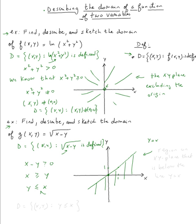So the domain will be the set of all (x, y) such that y ≤ x, and to describe it, it will be the region on the xy-plane that is below the line y = x.